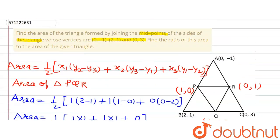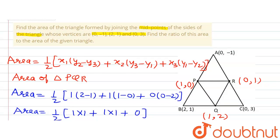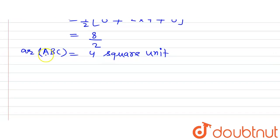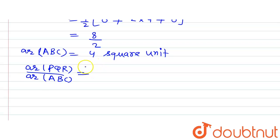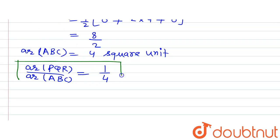Now we have area of PQR and area of ABC. We are supposed to find the ratio of area of triangle PQR to the area of triangle ABC, because the new triangle is formed by joining the midpoints. Area of PQR = 1 square unit, area of ABC = 4 square units. So the ratio is 1:4. This is the answer to the second part of the question.